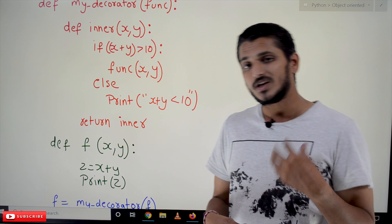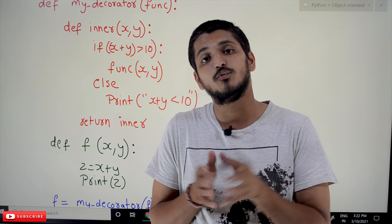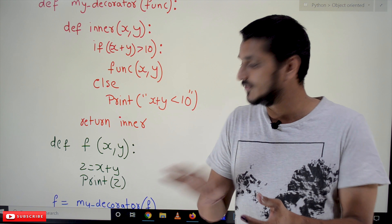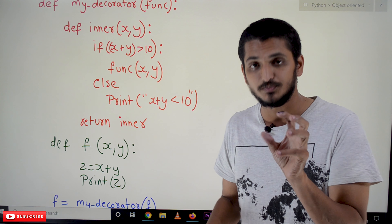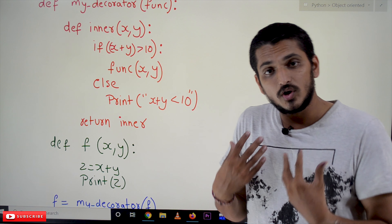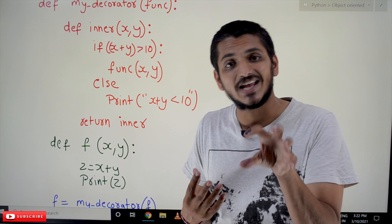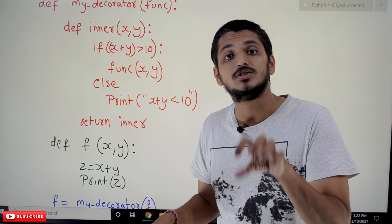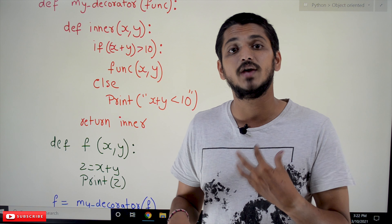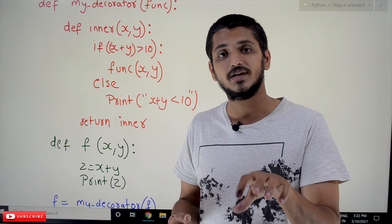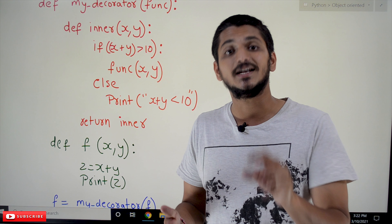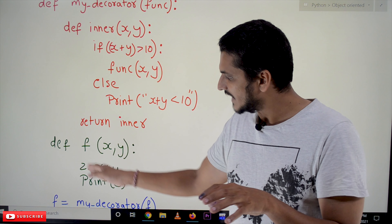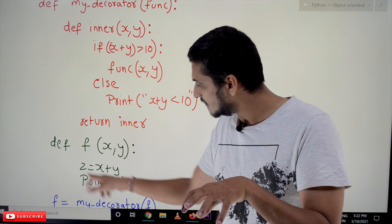So what happens if you want to apply some condition on this function without changing the functionality of this function? It's a bit complex to understand. We want to impose some condition on this logic without changing the functionality of this function. We can do it in Python. We are trying to impose a condition on this function without changing the functionality of this function.